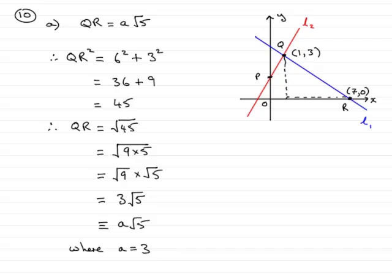So it's worth updating the graph. We can say that this length QR is 3√5. Alright, so I'll put that on there.